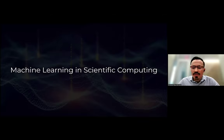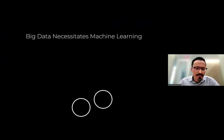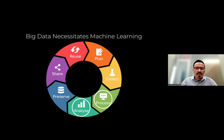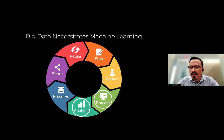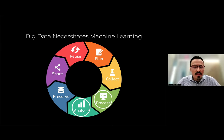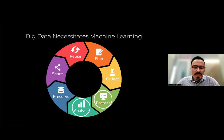Let's talk briefly about machine learning in scientific computing. There is an increasing amount of data known as big data. In science, many fields are generating data, collecting data, and trying to analyze data. All of this really necessitates new tools such as machine learning. Machine learning is vital in both the processing phase and the analysis phase of the data lifecycle.